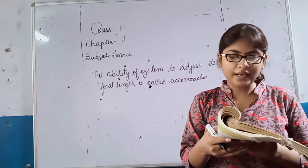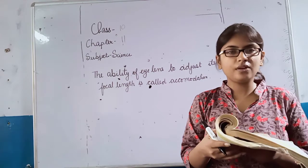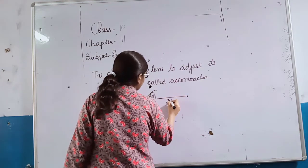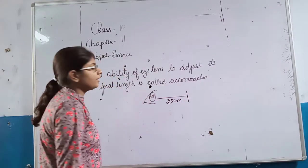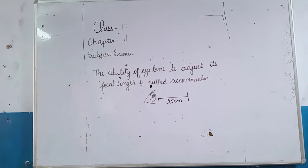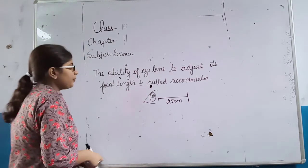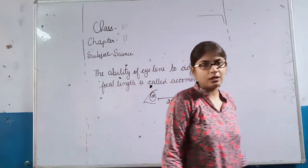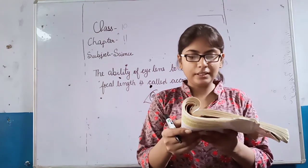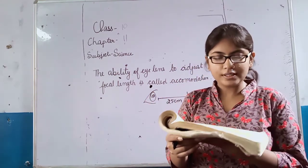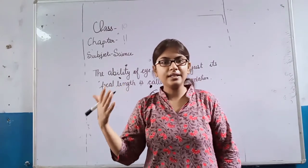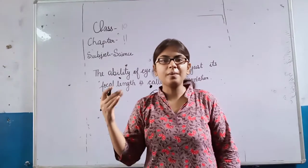You may see the image being blurred or feel strain in the eye. To see an object comfortably and distinctly, you must hold it at about 25 cm from the eyes. The linear distance at which objects can be seen most distinctly without strain is called the least distance of distinct vision.